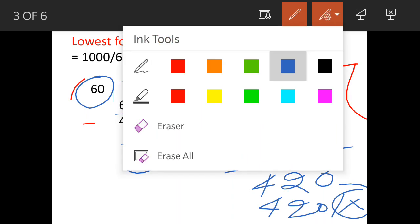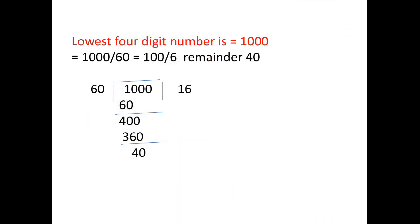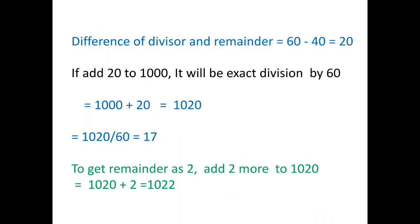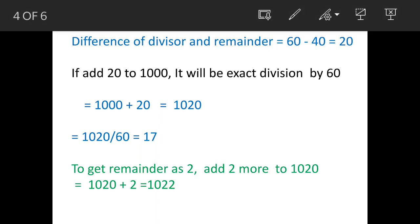So when we added the difference of the divisor and remainder to the number, the remainder has become 0. So we'll use this property now to find the answer. Now the difference we have noted is 20, the difference of divisor and the remainder.